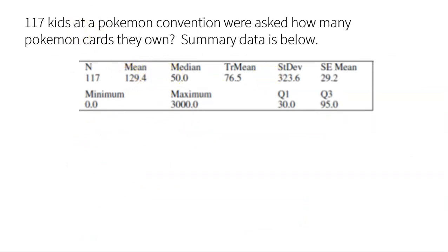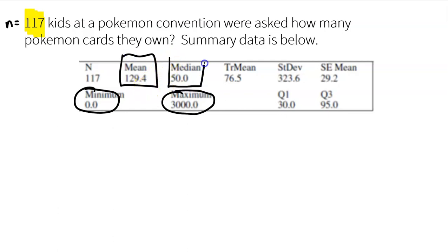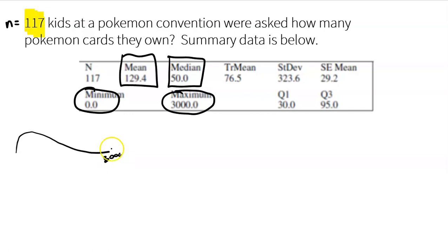At a Pokemon convention, we interviewed 117 kids — so sample size N is 117 — and simply asked how many Pokemon cards they have. One kid said none, one kid said 3,000. The mean was 129.4 and the median was 50. When you have a mean and median that are very far apart, that means you're skewed. Since the mean is way higher, the data is skewed to the right — probably because of that enormous outlier of 3,000, which is dramatically pulling the mean higher.